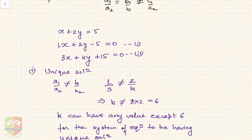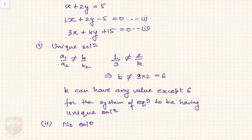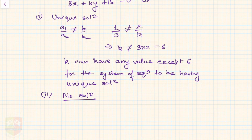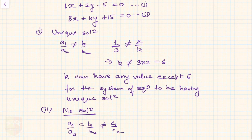Now for part two — no solution. For no solution, the criteria is a1 by a2 must equal b1 by b2, and must not equal c1 by c2. So let us find a1 by a2: that gives 1 by 3, which must equal 2 by k.